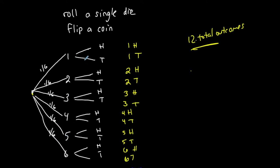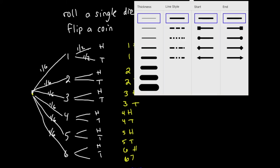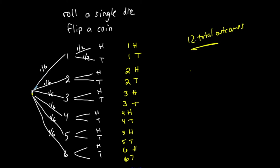What's the probability of getting heads or tails? It's a one-half chance of heads and one-half chance of tails since there are two outcomes. Following the branch in green — rolling a one and then flipping heads — I multiply the probabilities along that branch: one-sixth times one-half equals one-twelfth. There's a one-twelfth chance of that particular situation happening.